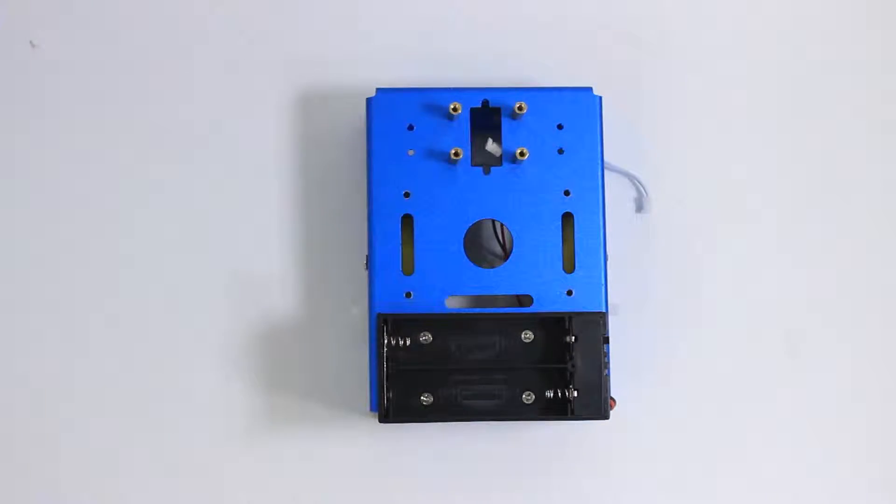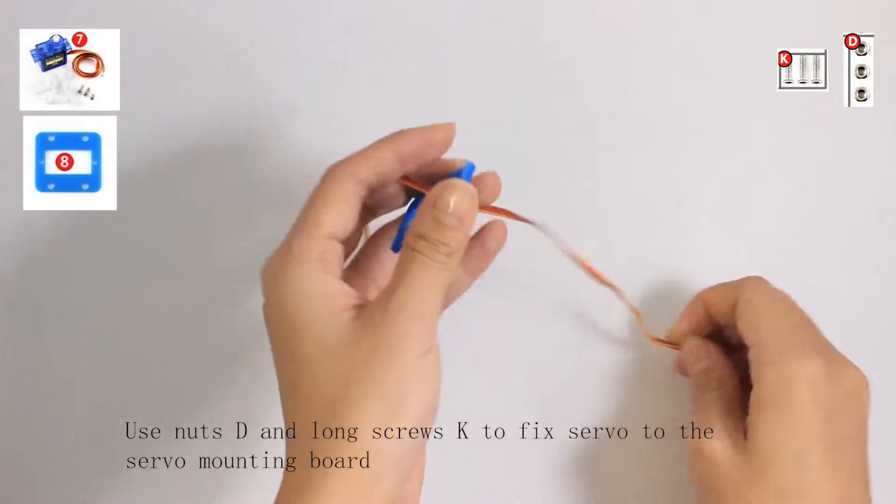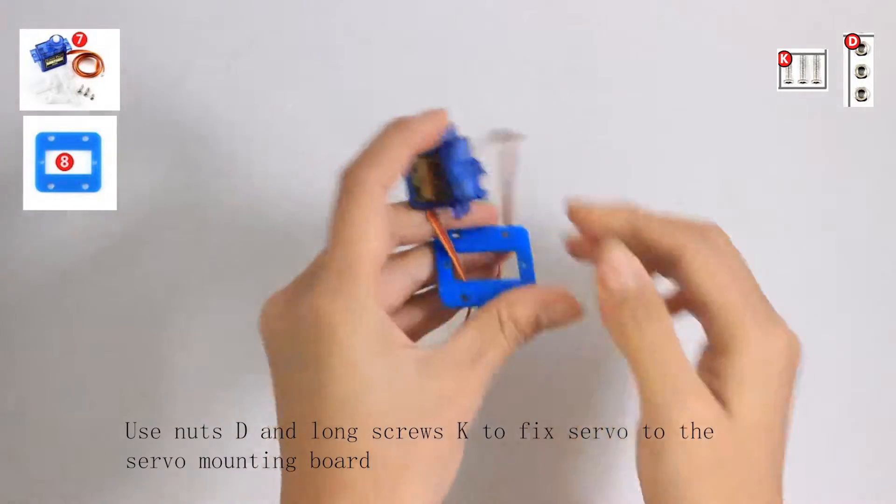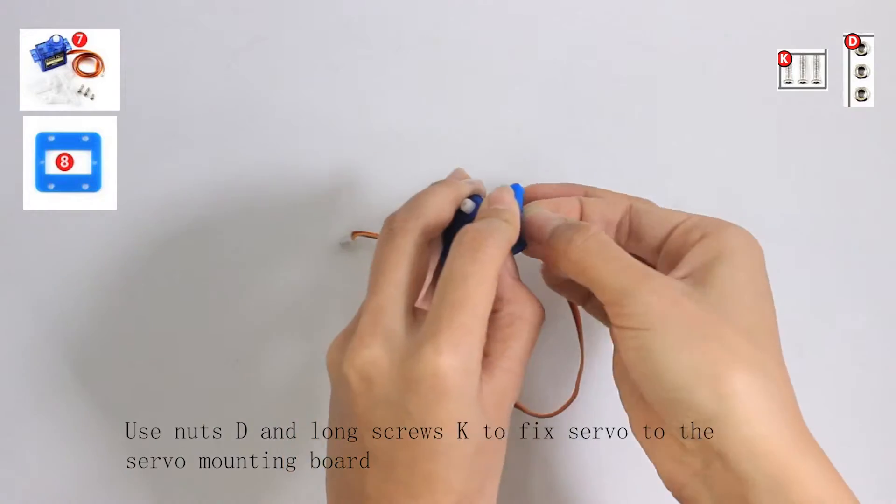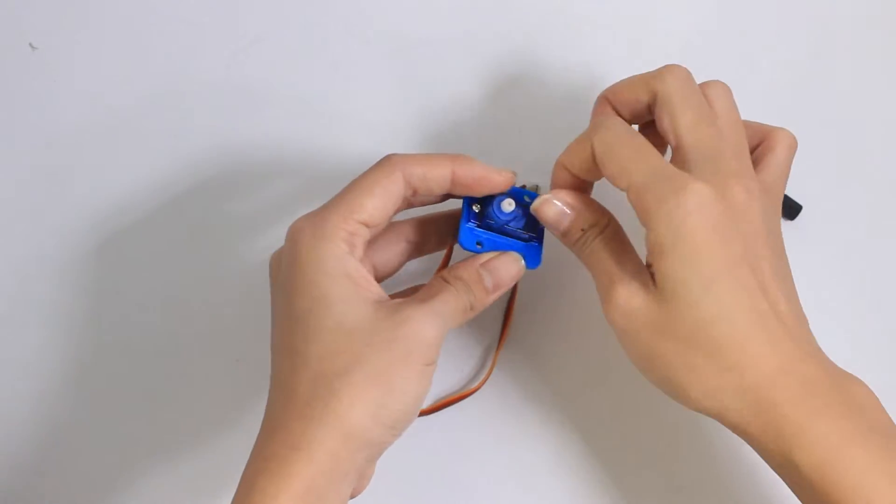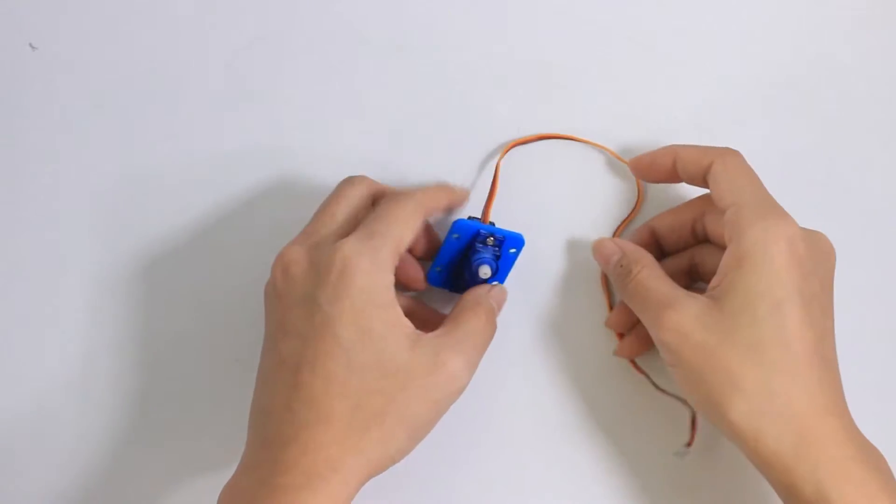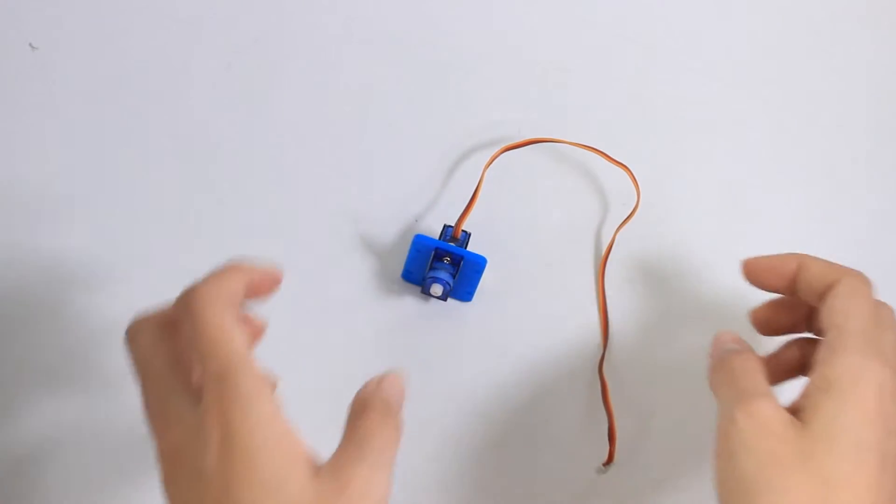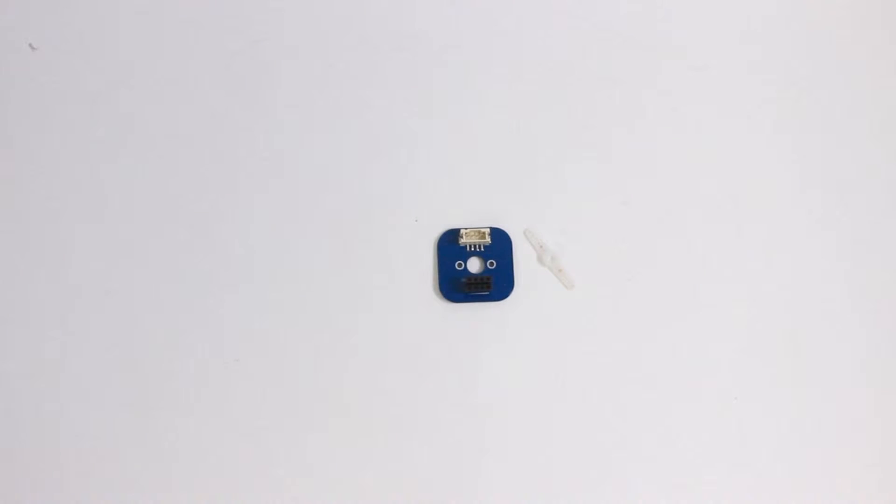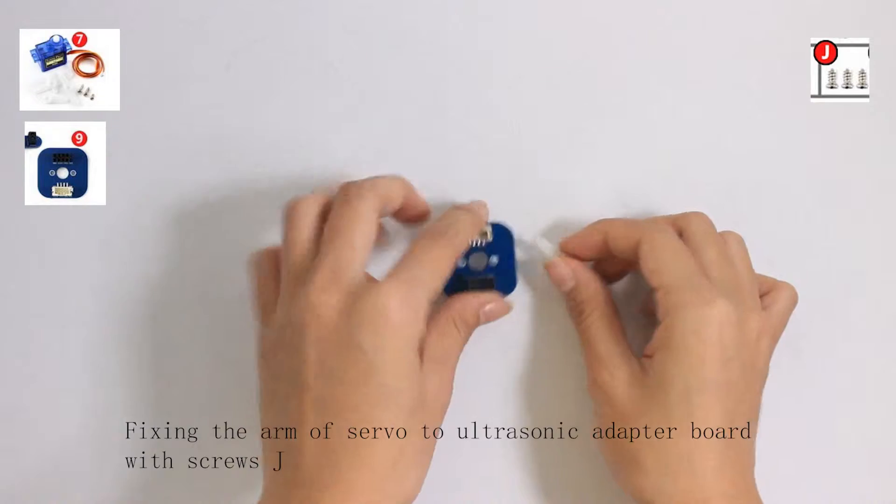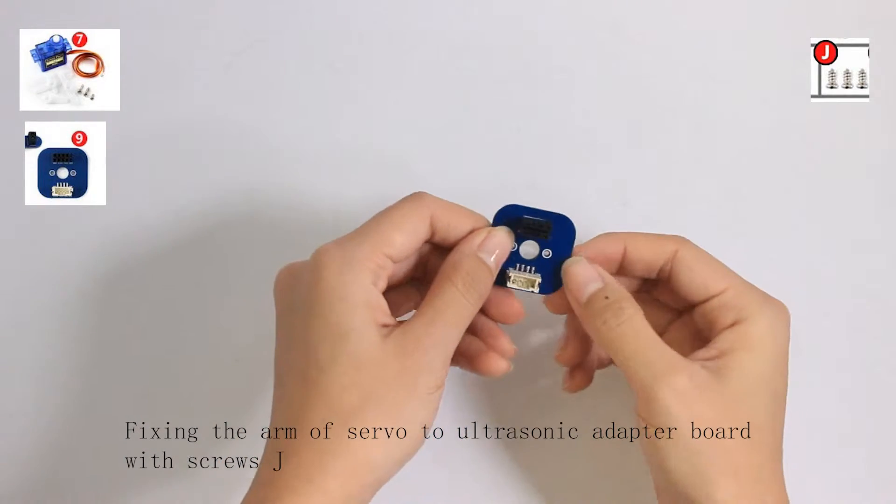Using nut D and the long screw K to fix servo to the servo mounting board. Then fixing the arm of servo to the adapter board of ultrasonic sensor with screw J.